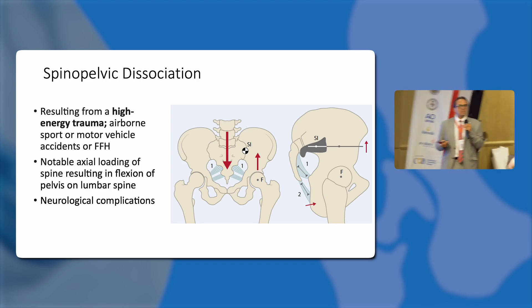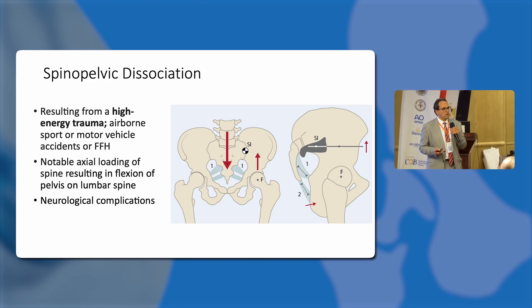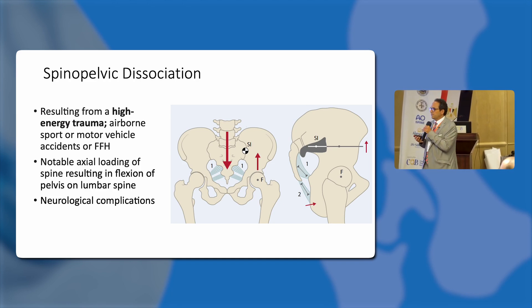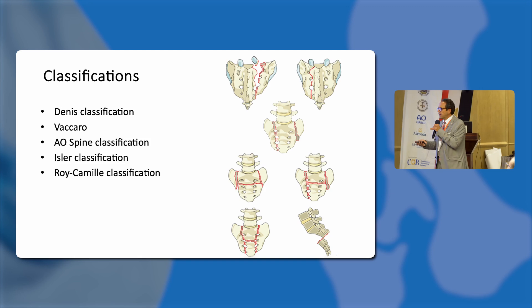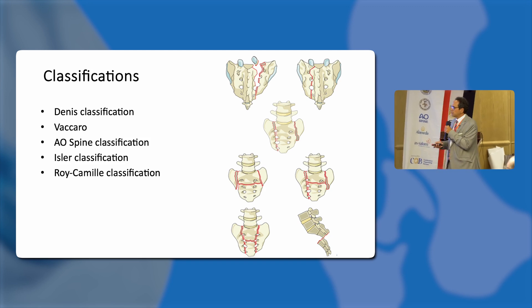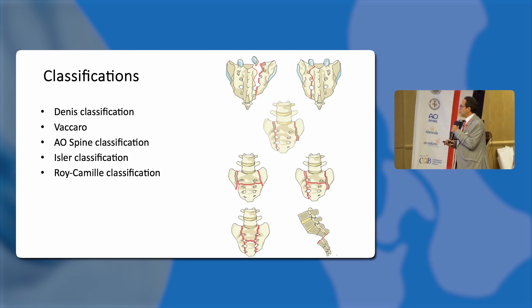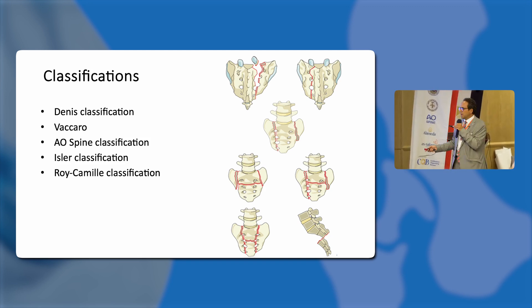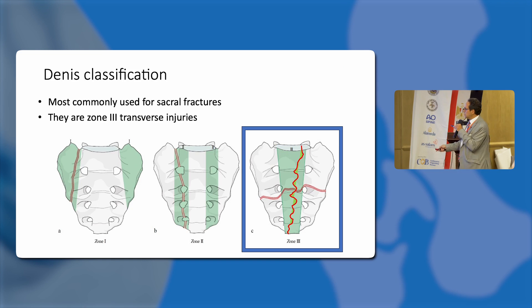There is a very high incidence of neurological complications in this injury. Classifications include Dennis, Vaccaro, AO Spine, Isler, and Roy-Camille. With Dennis, we're speaking about transverse zone three injuries mainly. With Vaccaro, we're speaking about the H and U patterns. The lambda pattern would probably indicate a unilateral case, where the pelvis is not going to be completely separated from the spine.